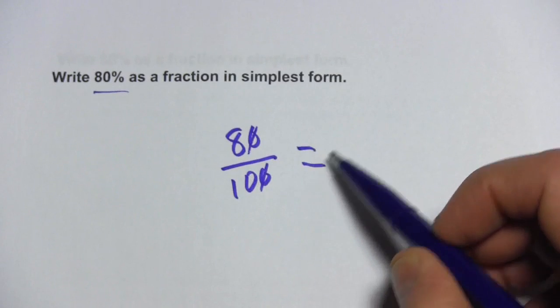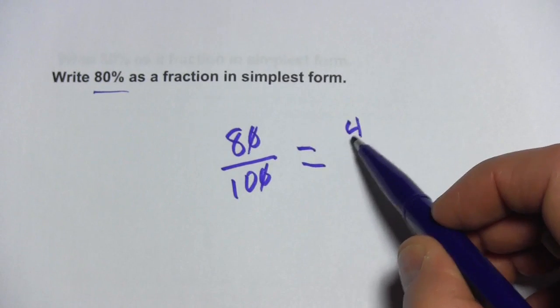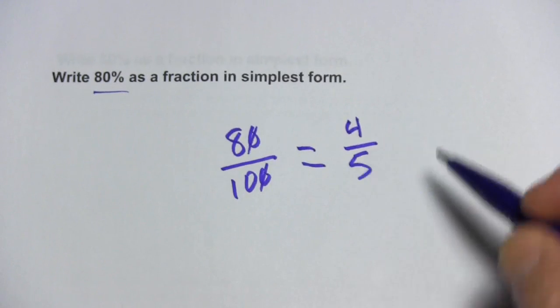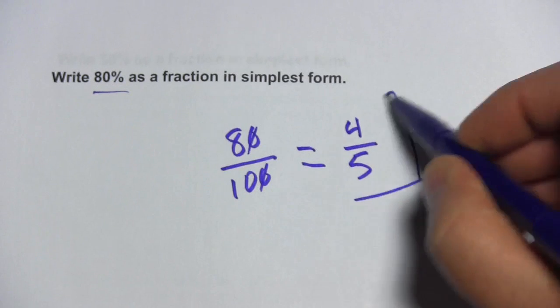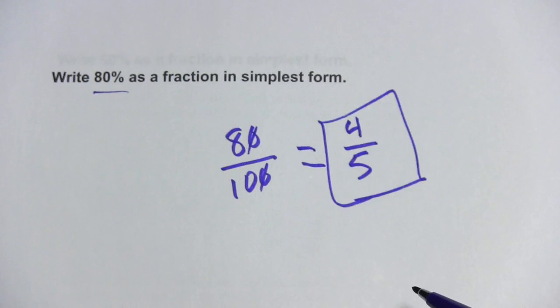Both of those are still divisible by 2, so let's do that. 8 divided by 2 is 4, 10 divided by 2 is 5. And I think that's the simplest term you can get there. So 4/5 is the same as 80%.